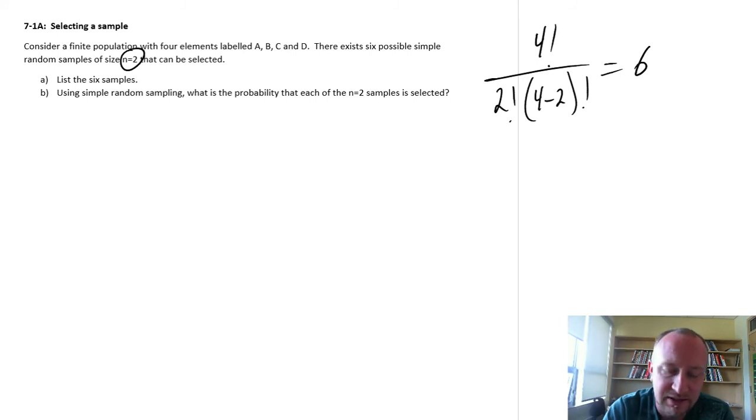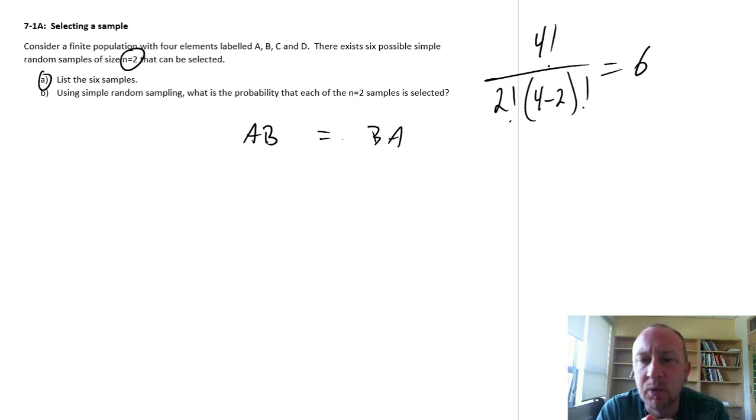We don't need to worry about permutations here, because if we looked at going through the six possible samples, a and b would be one of those samples, b and a would be the same thing. So we're not looking at permutations, we're just looking at combinations, and so that's why there's just six of them.